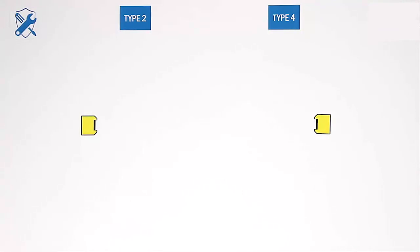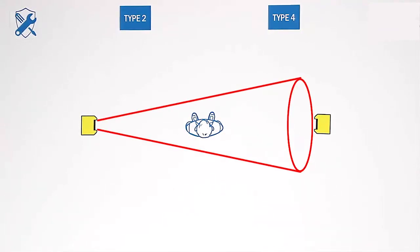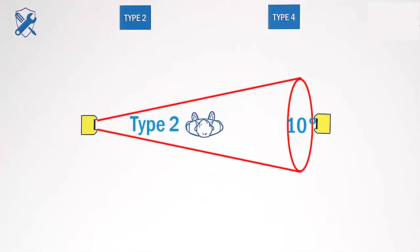A type 2 device offers an aperture angle of 10 degrees. Reflecting surfaces become a threat as the beams get deflected.